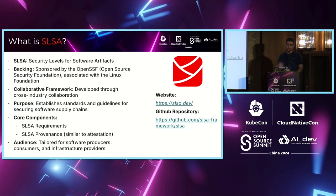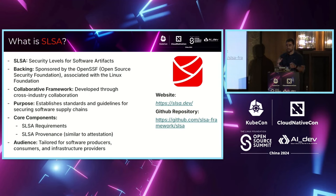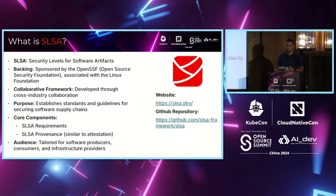Supply chain security is clearly important. If you want to implement it, a good starting point is the Supply-chain Levels for Software Artifacts framework — SLSA. It's backed by the OpenSSF (Open Source Security Foundation), linked to the Linux Foundation like the CNCF. It's a cross-industry collaborative framework with the purpose of establishing guidelines to improve supply chain security mainly at build time. Inside SLSA you find a list of requirements, a specification for provenance — an attestation file with metadata about how software was built — and it targets producers, consumers, and infrastructure providers.